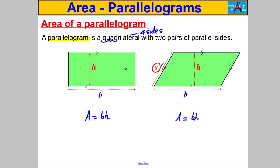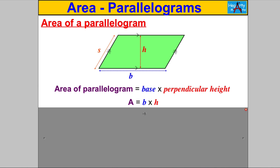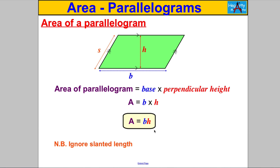So let's formalize that: for a parallelogram with base length B, perpendicular height H, and slanted distance S, the area is simply B multiplied by H. We can ignore the slanted length — it is not necessary in the calculation.